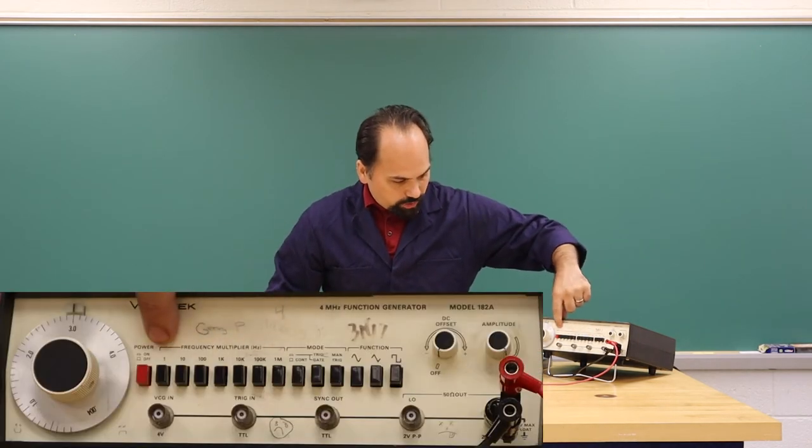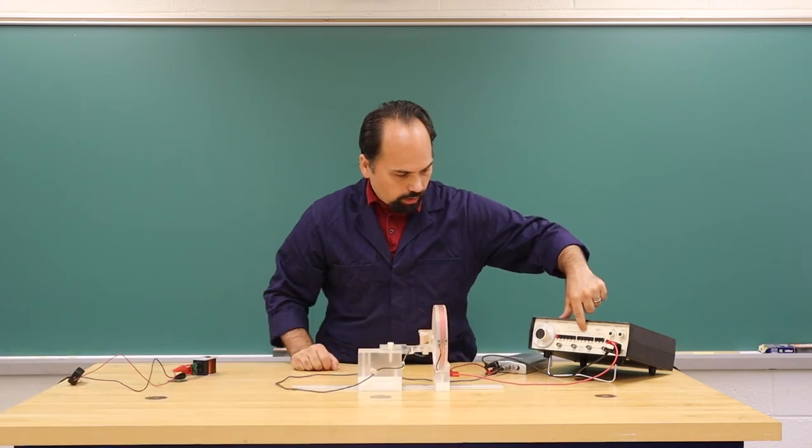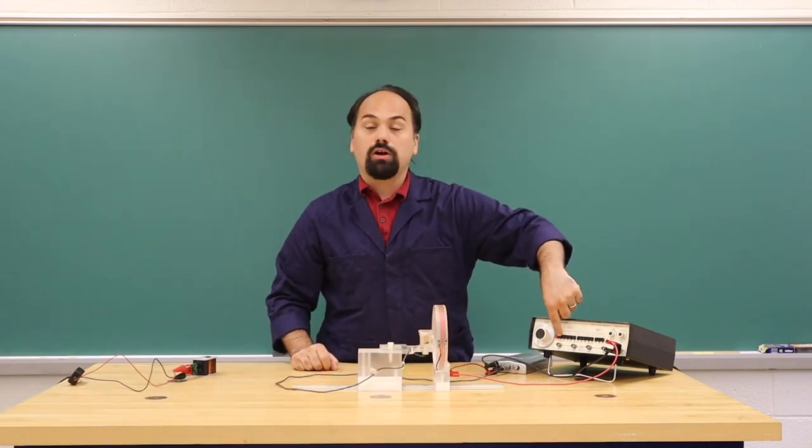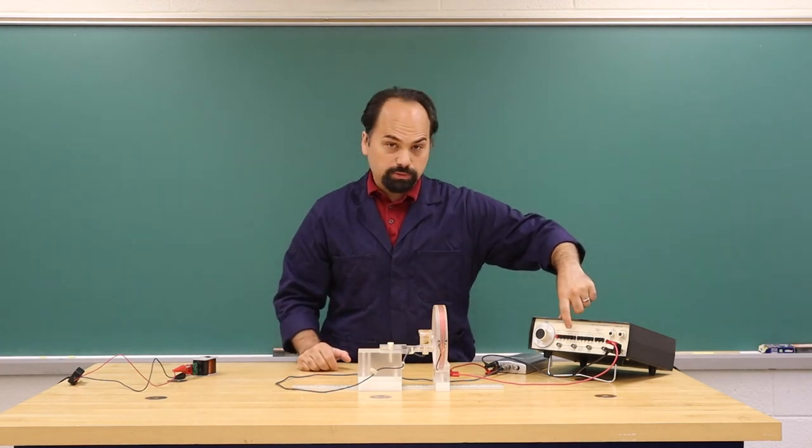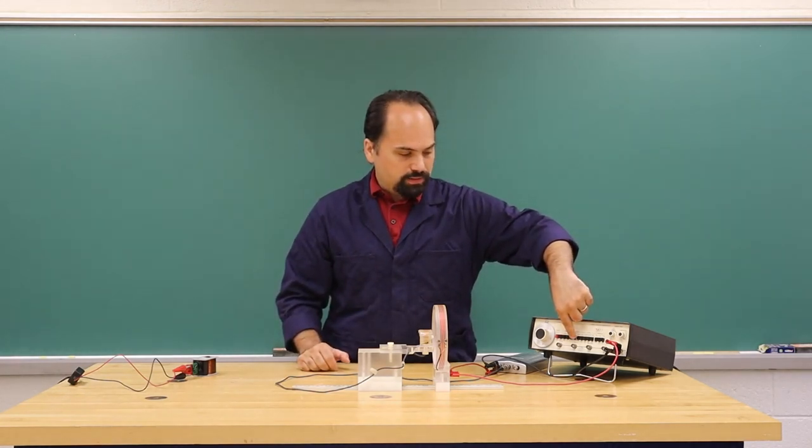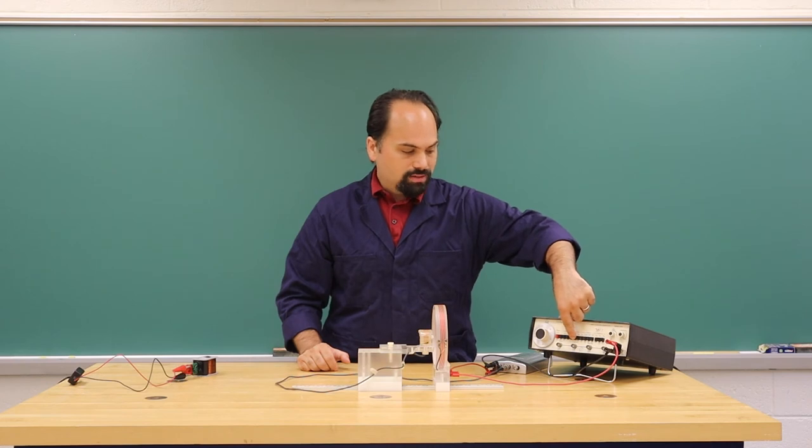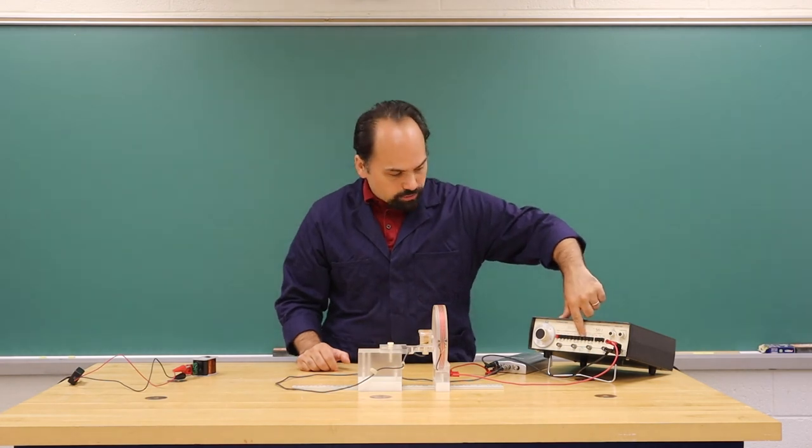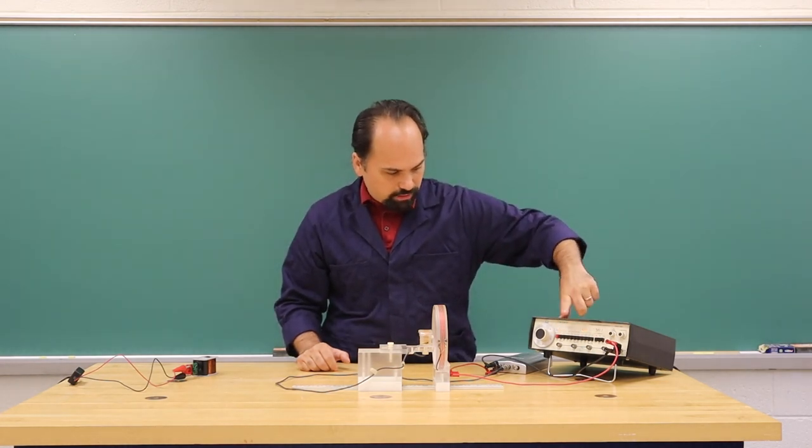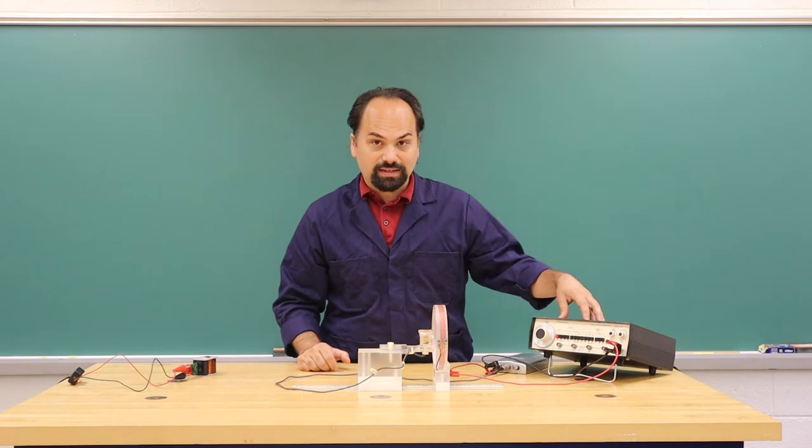You have your frequency multiplier, which sets it if you are going to be ones, tens, hundreds. It is possible to press one of these buttons enough that it unselects the one that is pressed, but not select a new one. So if you seem to have no signal, make sure that one of the frequency multipliers is in fact pressed.